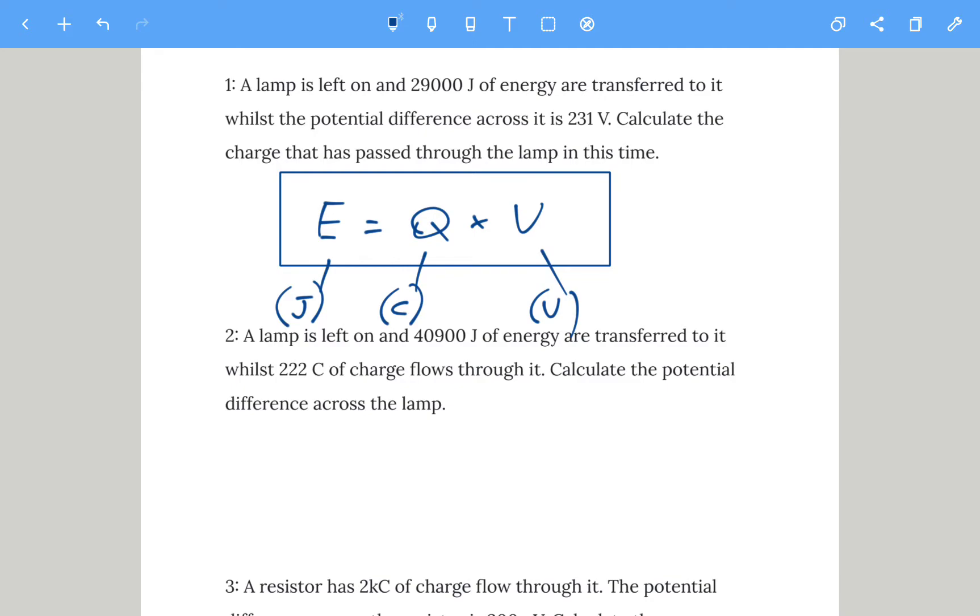The second equation for the last three questions is Q equals I times t, so charge is current times time. Charge is measured in coulombs, current is measured in amps, and time is measured in seconds. Once you've got that down, we can do these questions.